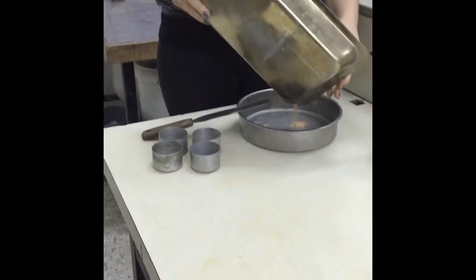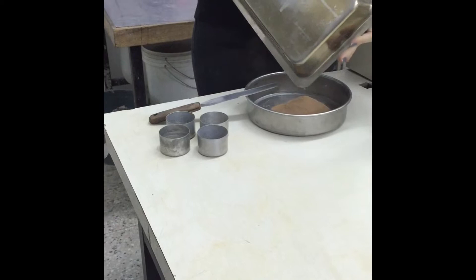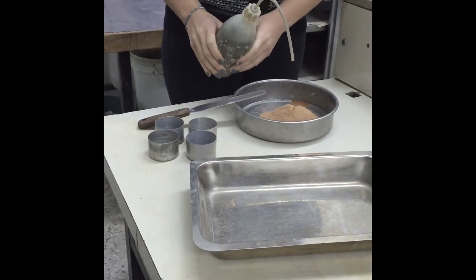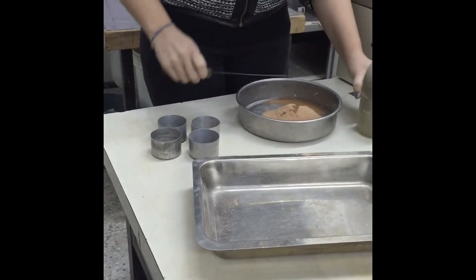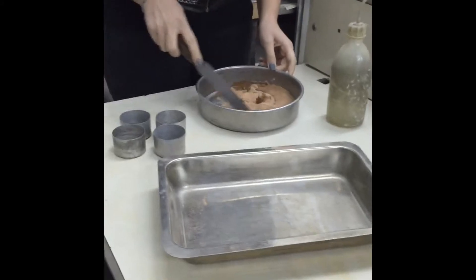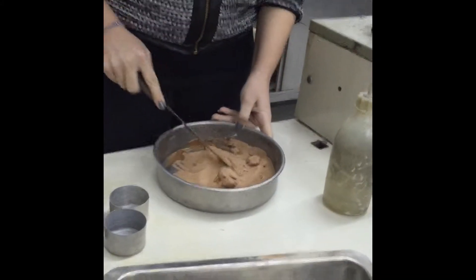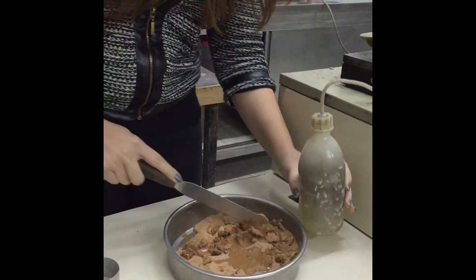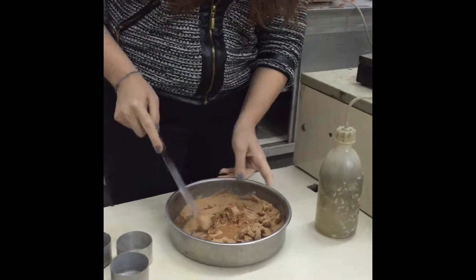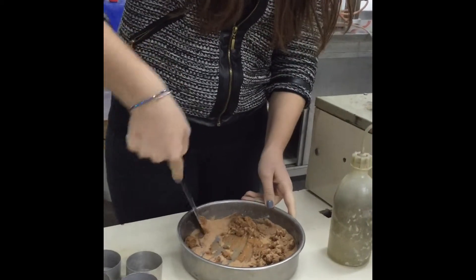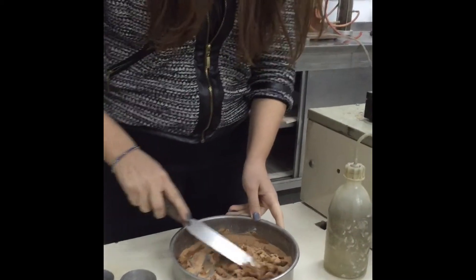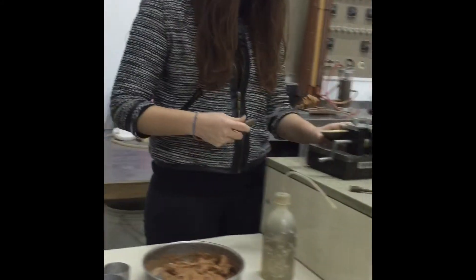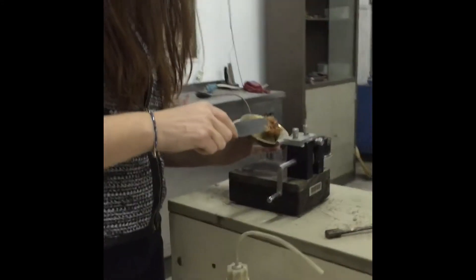We put it into the evaporating dish and add some water and we mix it with our spatula to make it have a uniform shape. We add some more water. Keep mixing with the spatula. It's having a putty form so we replace it into the Casa Grande apparatus.